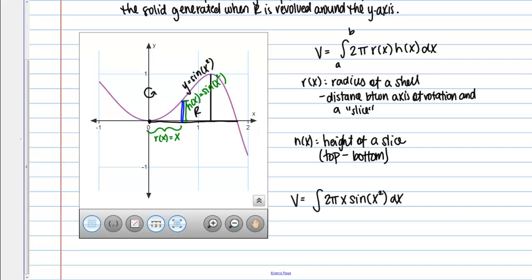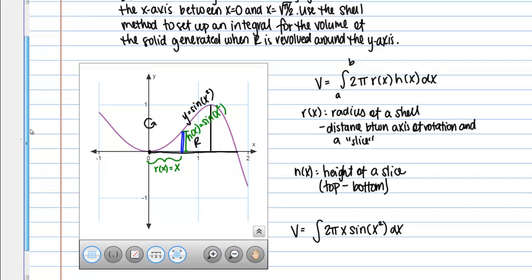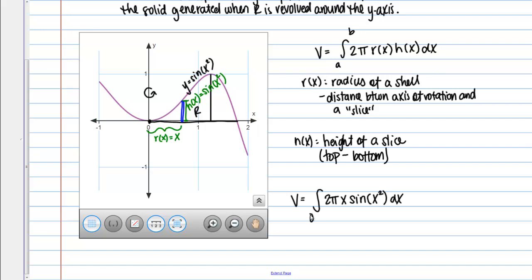Let's just fill in the bounds. We're told explicitly the x values that bound our region. We've got 0 on the left, and then the square root of pi over 2. Just remember that when you're integrating with respect to x, you have to use x values as your bounds.